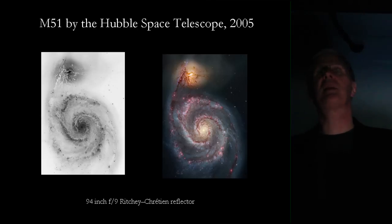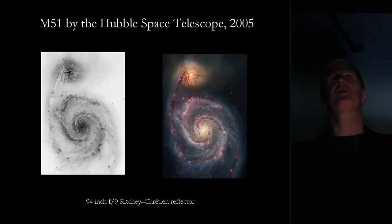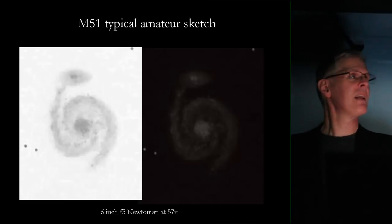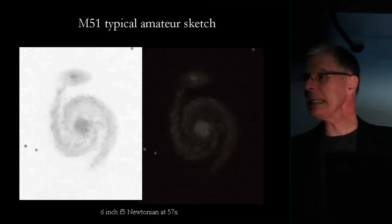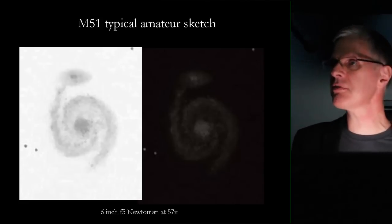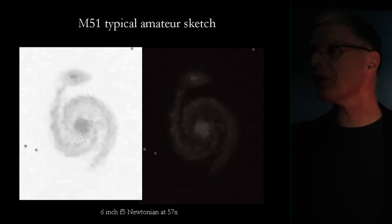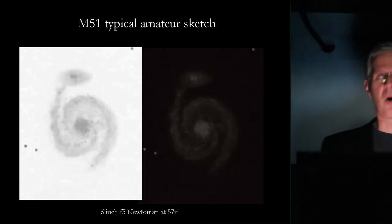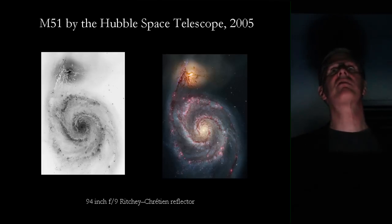Here's the Hubble image of M51 — a 94-inch reflector in space — and this is the finest image we have of it. Just look at that gorgeous detail. It captures all the main structure that none of the other drawings showed. That's pretty remarkable considering the six-inch telescope sketch. Was this person deluding themselves? It depends on how you define delusion, but certainly biases played an enormous role in producing that sketch compared to what Hubble can see.